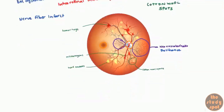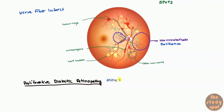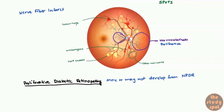Let's talk about the late stage, known as proliferative diabetic retinopathy (PDR). PDR may or may not develop from non-proliferative — sometimes non-proliferative diabetic retinopathy happens first and then develops into proliferative, and sometimes you go straight into proliferative. In this case, the non-proliferative changes are superimposed on the proliferative changes, suggesting the non-proliferative changes occurred first and then the proliferative changes occurred later.